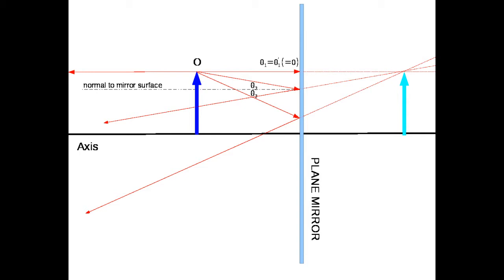We can see that the image will form on the opposite side of the mirror from the object by doing ray tracing. Ray tracing is where we pick a number of representative light rays emanating from a common point on the object, follow them as they strike the surface of the mirror, reflect according to the law of reflection, and then bounce away from the mirror. We then figure out where those reflected rays converge or appear to converge in space, and that point of convergence represents the location of the corresponding point on the image.